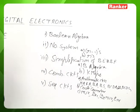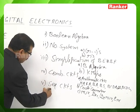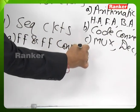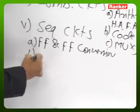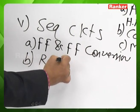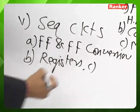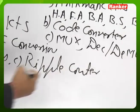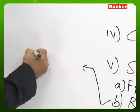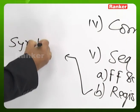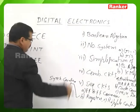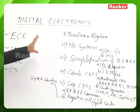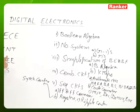In Sequential Circuits, we start with flip-flops and flip-flop conversions. The next topics are registers, ripple counters, and synchronous counters. These are the main topics in sequential circuits, and they are common topics for ECE, Instrumentation, EEE, and Computer Science branches.